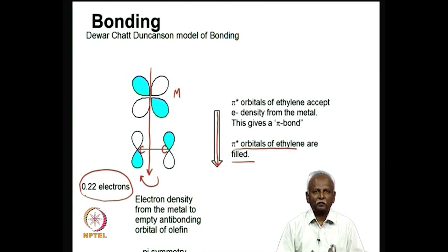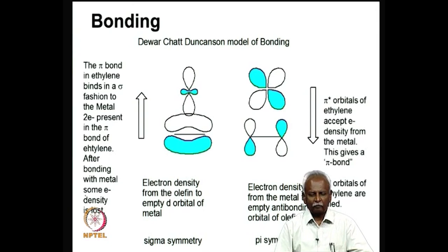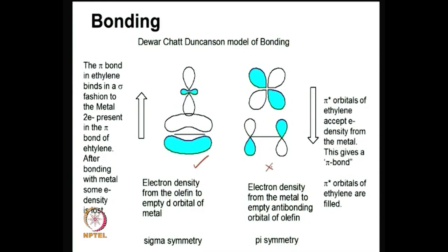This Dewar-Chatt-Duncanson model promotes a synergistic interaction between the metal and the olefin. Both interactions complement one another — one has sigma symmetry and the other has pi symmetry. Rotation does not break the sigma bond, whereas the pi bond is completely broken when you rotate the olefin. That is why there is a small barrier to rotation of an olefin.